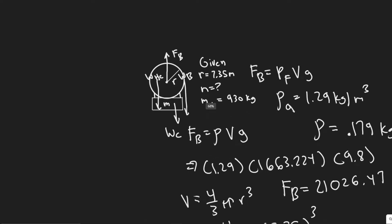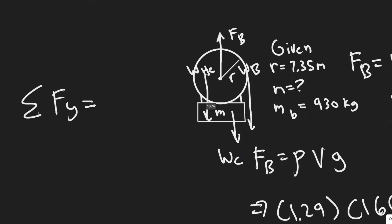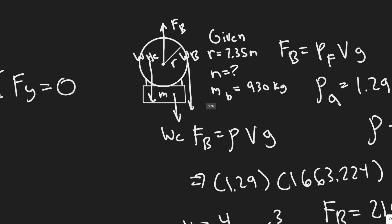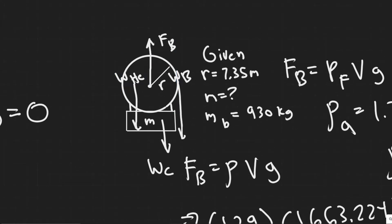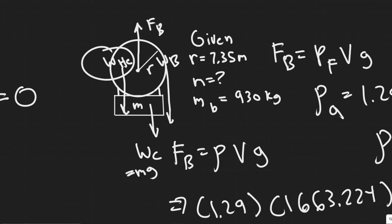If we sum the forces in the y-direction and we're trying to find the maximum value of cargo mass, it's going to be when the sum of the forces equals zero. So: FB minus the weight due to helium minus the weight due to the balloon equals the weight available to carry the cargo mass. We know W = mg, so dividing by g gives us the maximum mass we can carry.